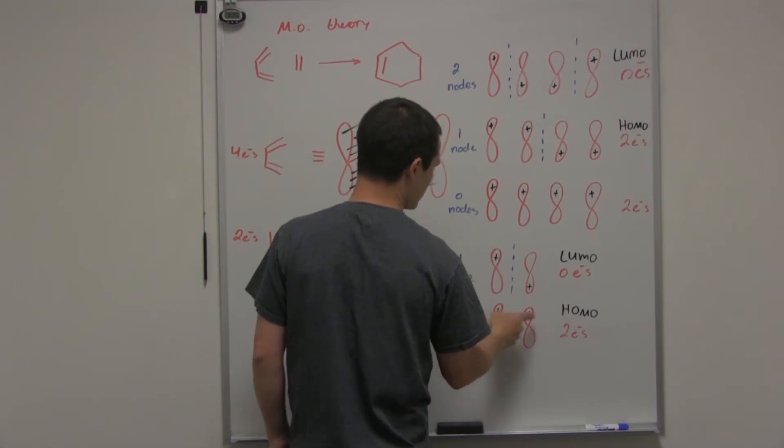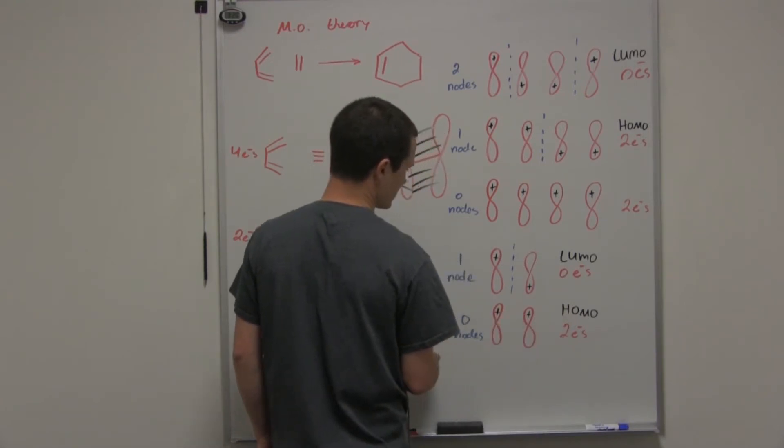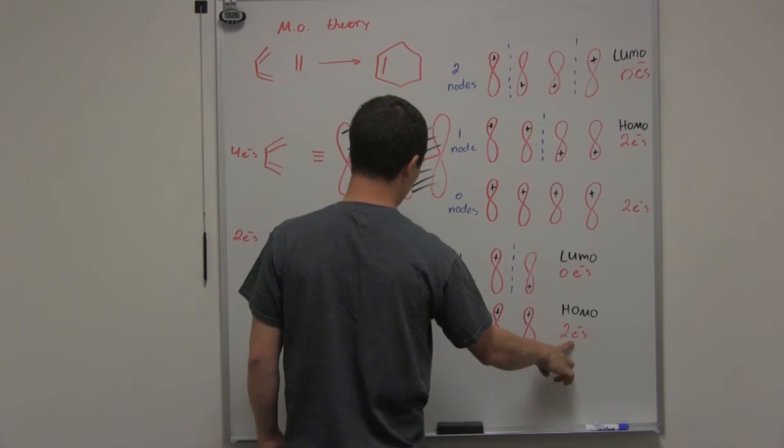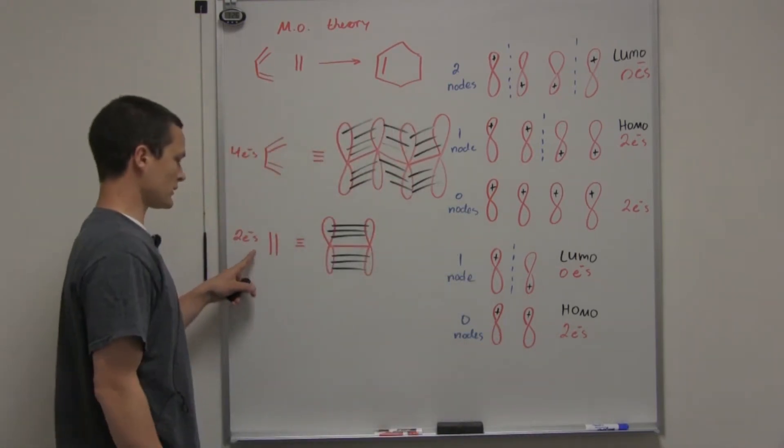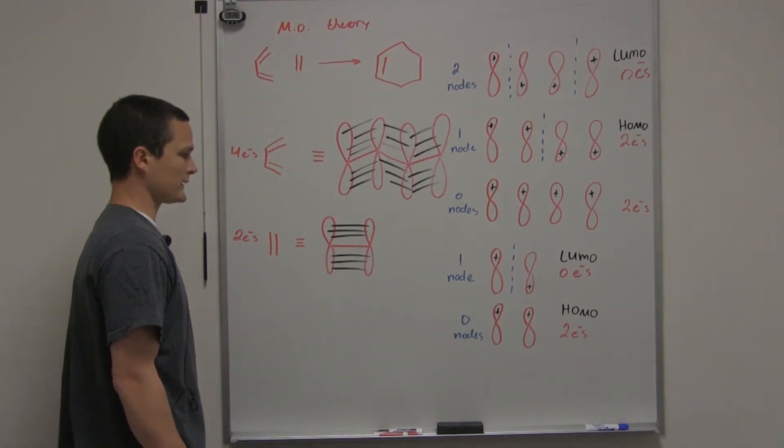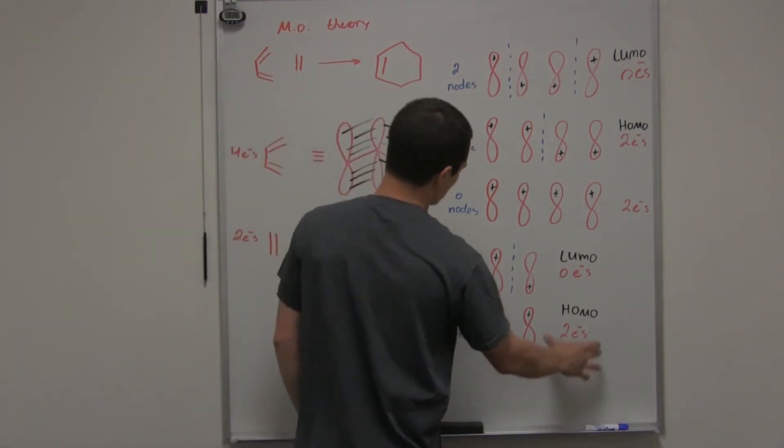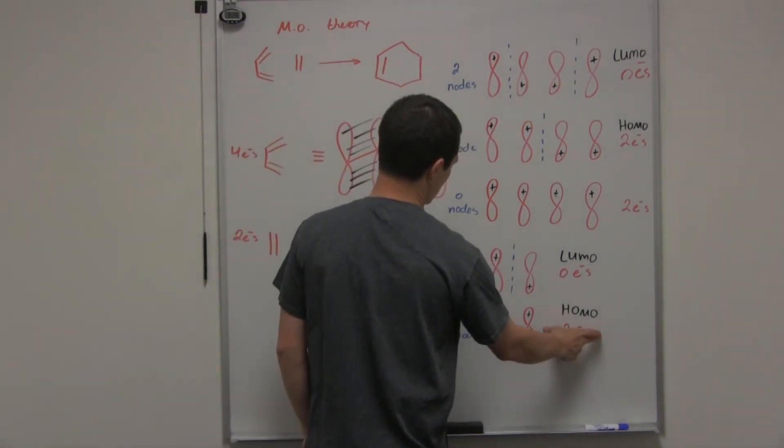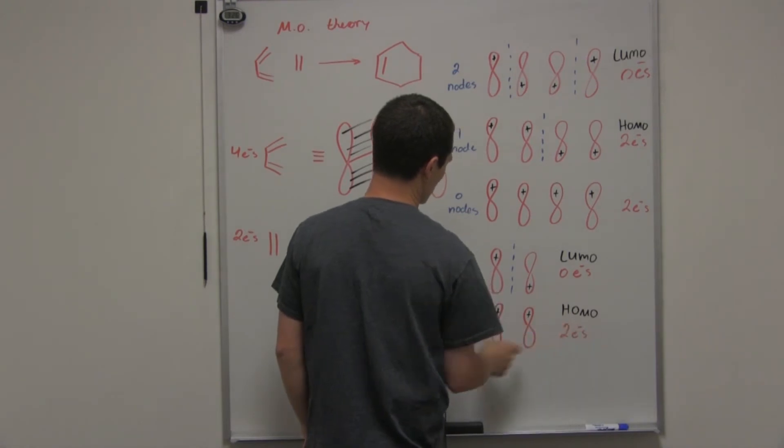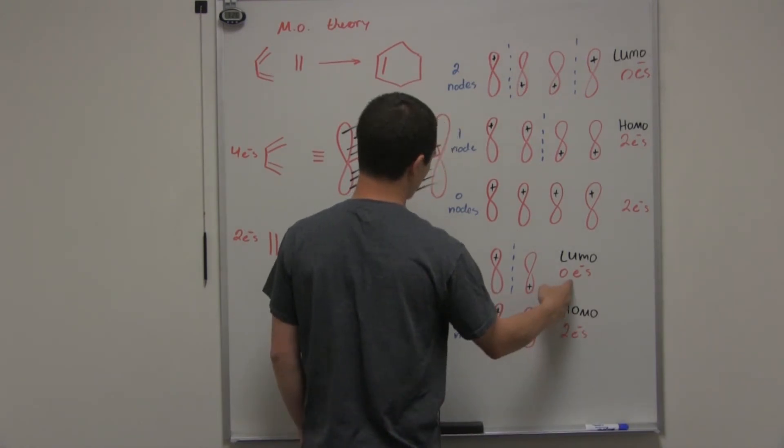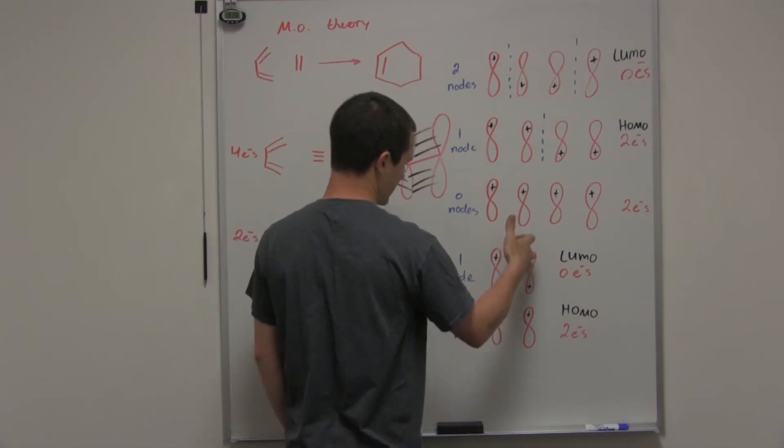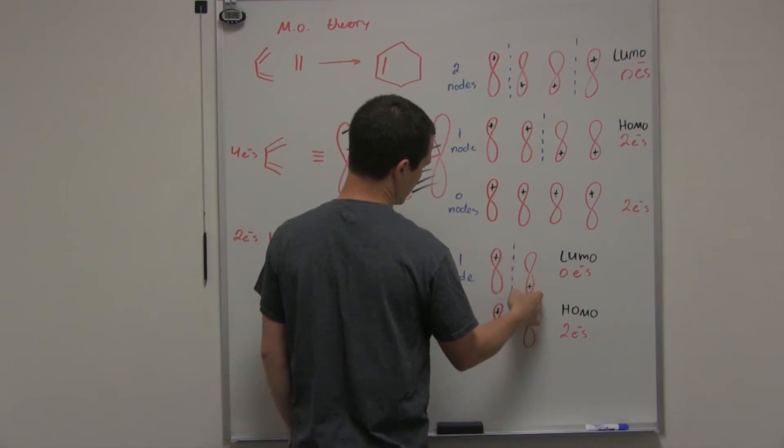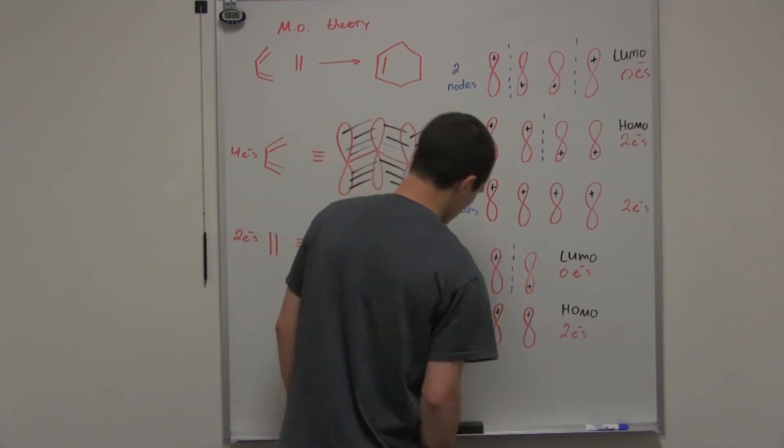We have both of these in phase, so we have zero nodes, and we have two electrons in this molecular orbital. We have two electrons total in this system because we have a single double bond. We've accounted for all of our electrons at this point. Going up one more to look at the LUMO, we have zero electrons. We have to introduce a node. So we make it as symmetrical as possible. We have this one in phase and this one out of phase.